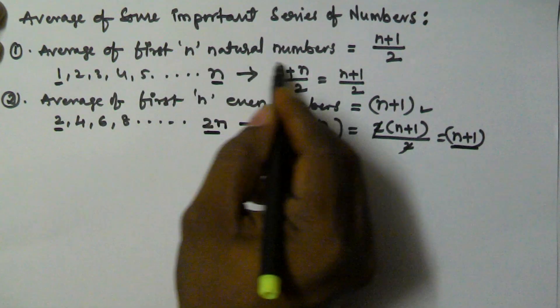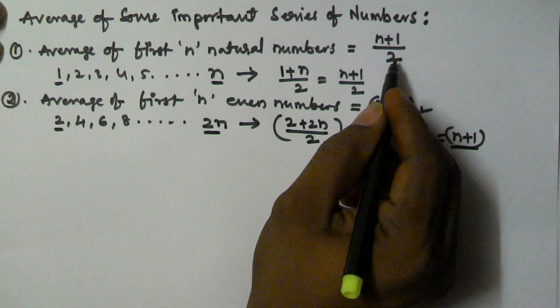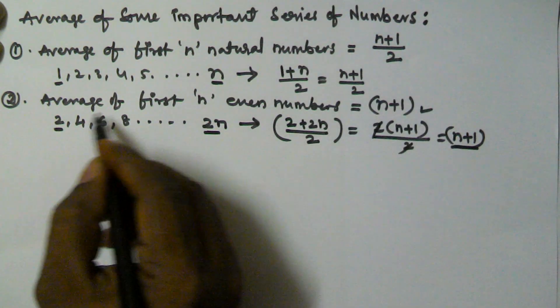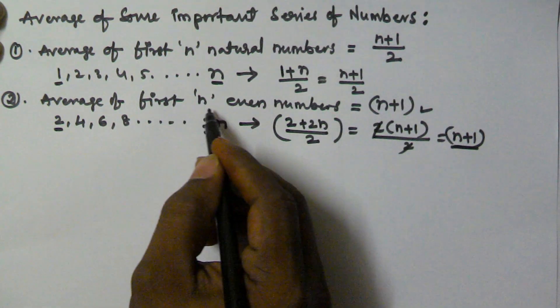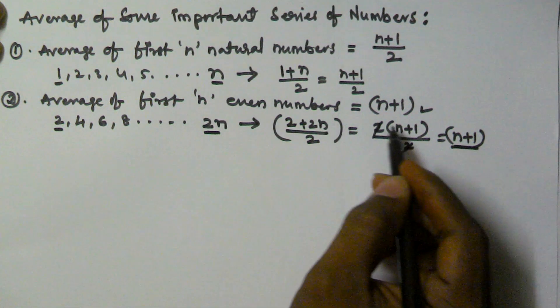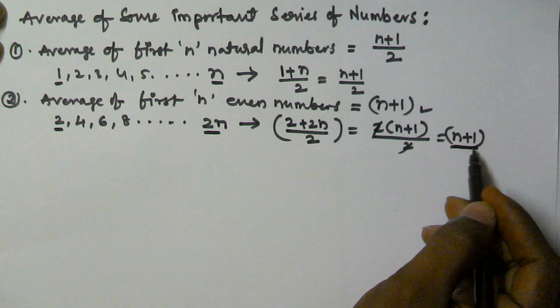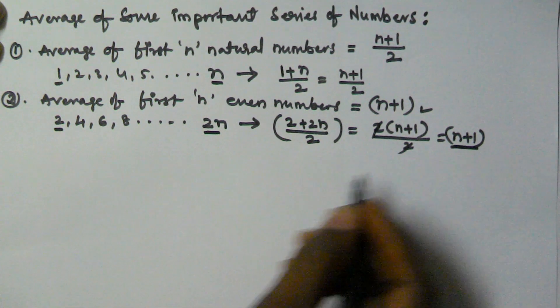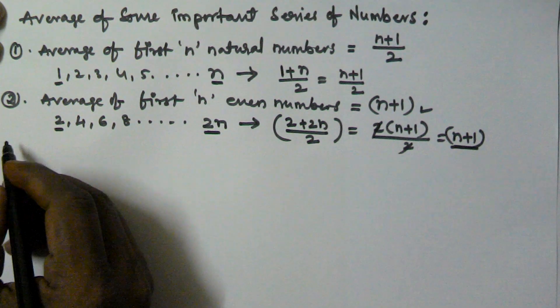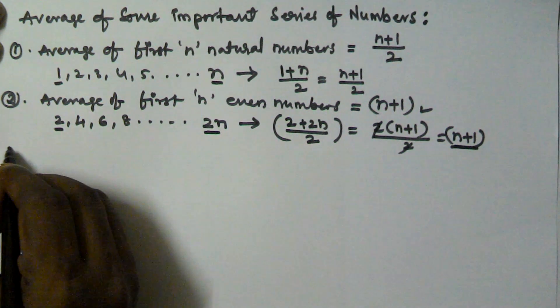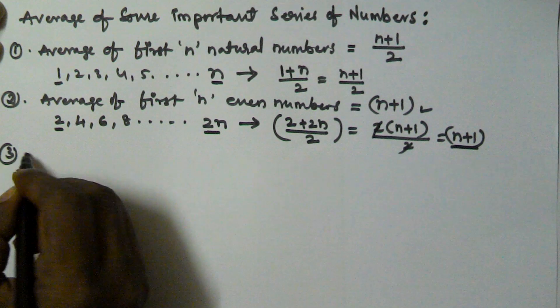So, the average of first n natural numbers is (n + 1) / 2, and the average of first n even numbers is n + 1. Now let's see the third point.